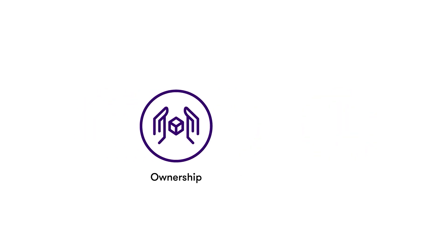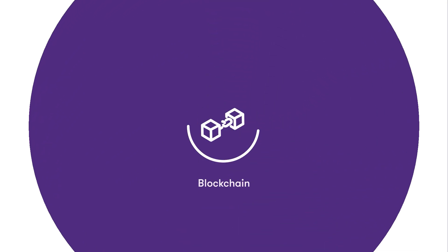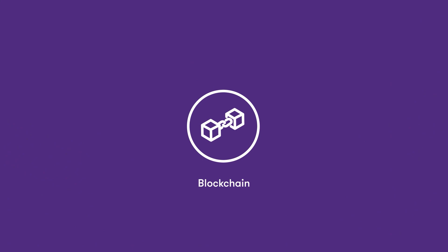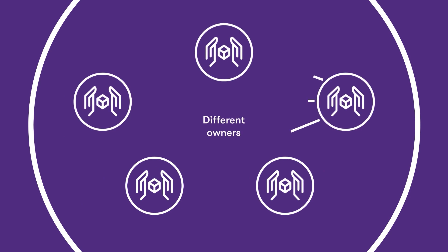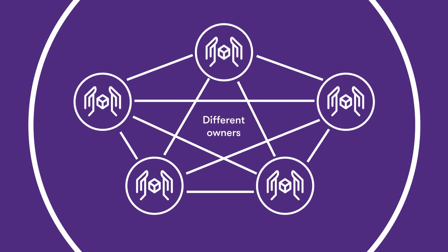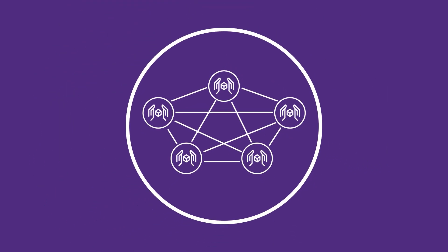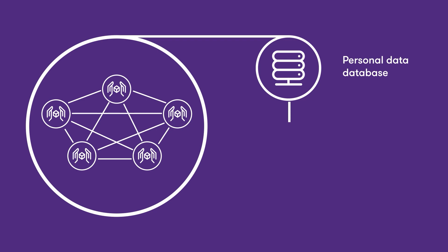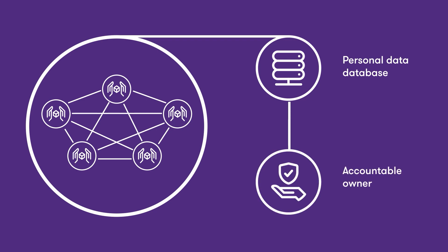Ownership. By its nature, blockchain data is equally owned at each place where it's distributed. But for personal data, regulations require one owner who is accountable for all data privacy. So, instead of storing personal data in a blockchain, consider storing index numbers that tie to personal data in a separate database. Then, one organization can own and secure that database while still sharing the blockchain.